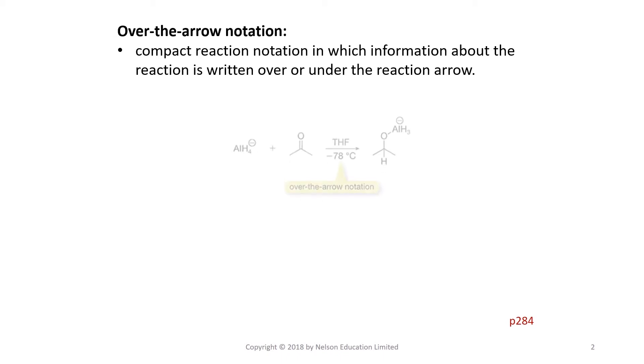For example, in this reaction, reactants are written on the left as normal and products are on the right of the arrow. Notice that the solvent, THF (tetrahydrofuran), and temperature conditions are written above and below the arrow respectively.